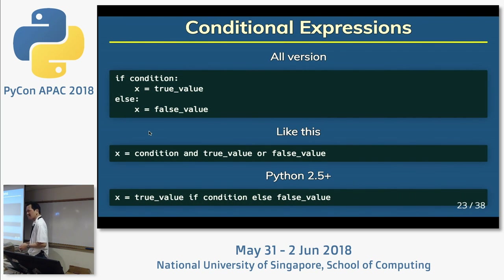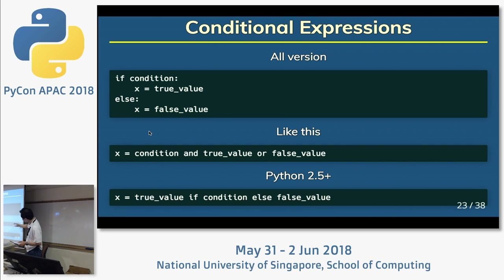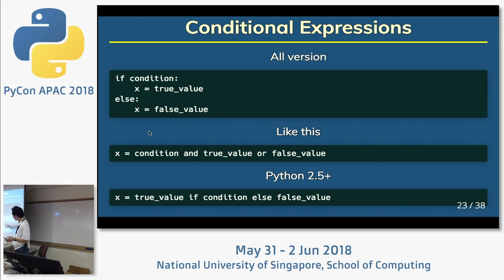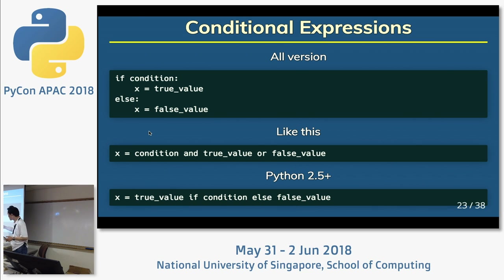Do you like one-liner code? I don't like one-liner code, but I sometimes use it. The top is the normal style. Before Python 2.4, we didn't have conditional expressions — sometimes you'd use something like this and more. Python 2.5 includes conditional expressions.